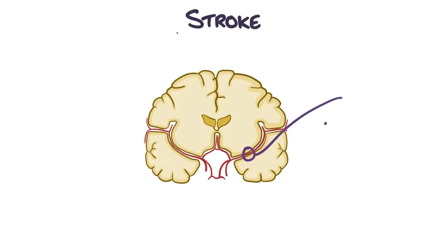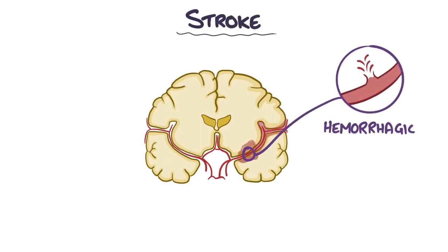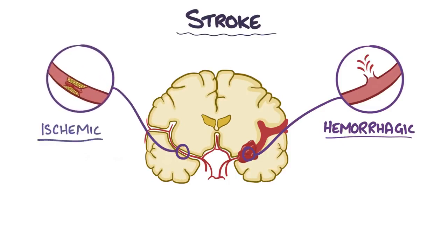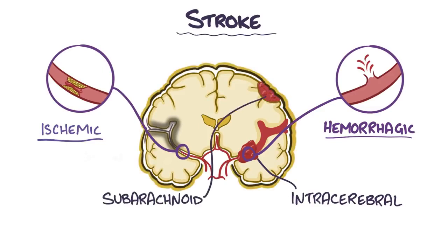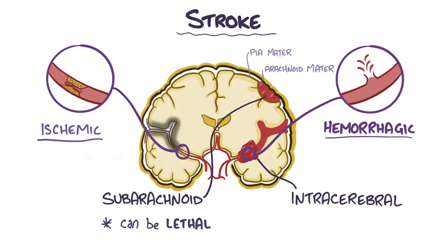There are two main types of stroke: a hemorrhagic stroke, which occurs when an artery ruptures and bleeds within the brain, and an ischemic stroke, which occurs when an artery gets blocked. Hemorrhagic strokes can be further split into an intracerebral hemorrhage, which is when bleeding occurs within the cerebrum, and a subarachnoid hemorrhage, which is when bleeding occurs between the pia mater and the arachnoid mater of the meninges — the inner and middle layers that wrap around the brain. We'll focus on the subarachnoid hemorrhage, which can quickly lead to death if left untreated. Subarachnoid hemorrhages can lead to a pool of blood under the arachnoid mater that increases intracranial pressure and prevents more blood from flowing into the brain.